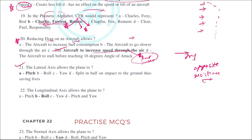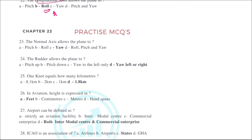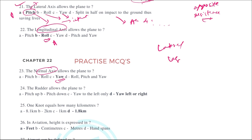The lateral axis allows the plane to pitch. These are aircraft movement axes. The lateral axis is for pitch, the longitudinal axis is for roll, and the normal axis allows the aircraft to yaw. These three axes help the aircraft maneuver — lateral axis is pitch, longitudinal is roll, and normal is yaw.